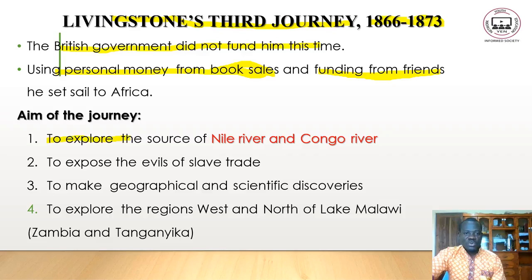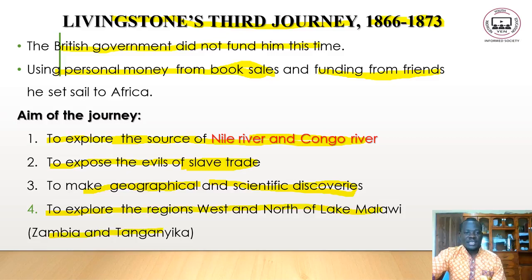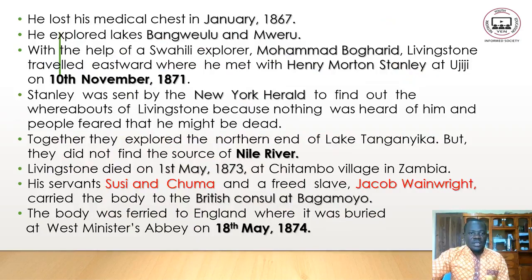The aims of the third journey were: first, to explore the source of the River Nile and River Congo; second, to expose the evils of slave trade; third, to make geographical and scientific discoveries; and fourth, to explore the regions west and north of Lake Malawi, including areas of Zambia and Tanganyika.